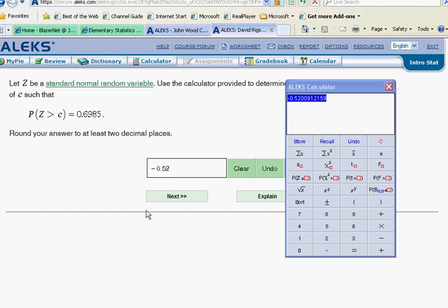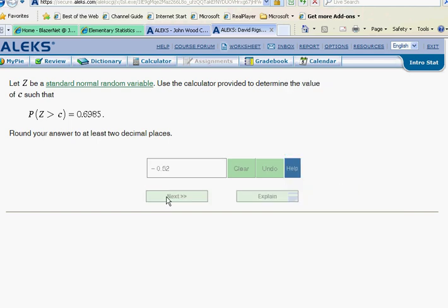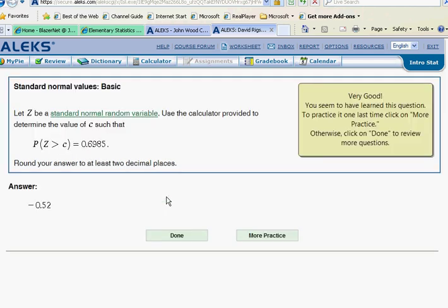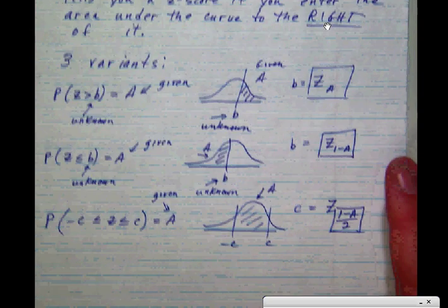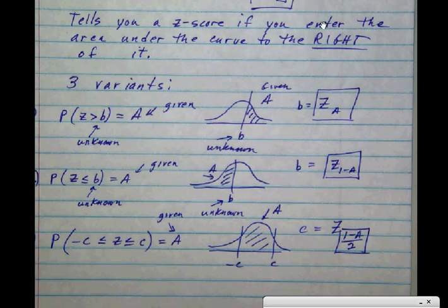As we've seen before, there are several variants to this problem. Let's go over here and look at my notes for this particular section. What I've just shown you is the first case. Because the z-button likes to give you the z-score when you know the area under the curve to the right of it, if we do know this area to the right, we can just immediately use the z-button. Down here, we'll simply put the known area.